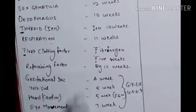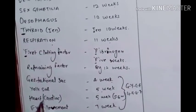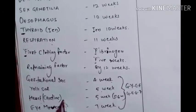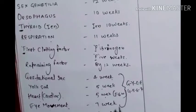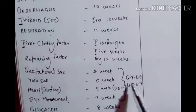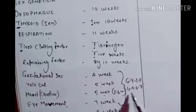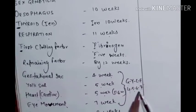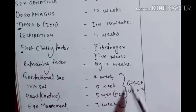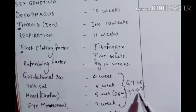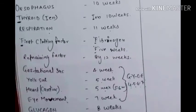For ultrasound findings: gestational sac appears at four weeks, yolk sac at five weeks, cardiac activity (heart) at six weeks, and eye movement at seven weeks. Just remember G-Y-C-E corresponding to weeks four, five, six, and seven — a simple sequential mnemonic.